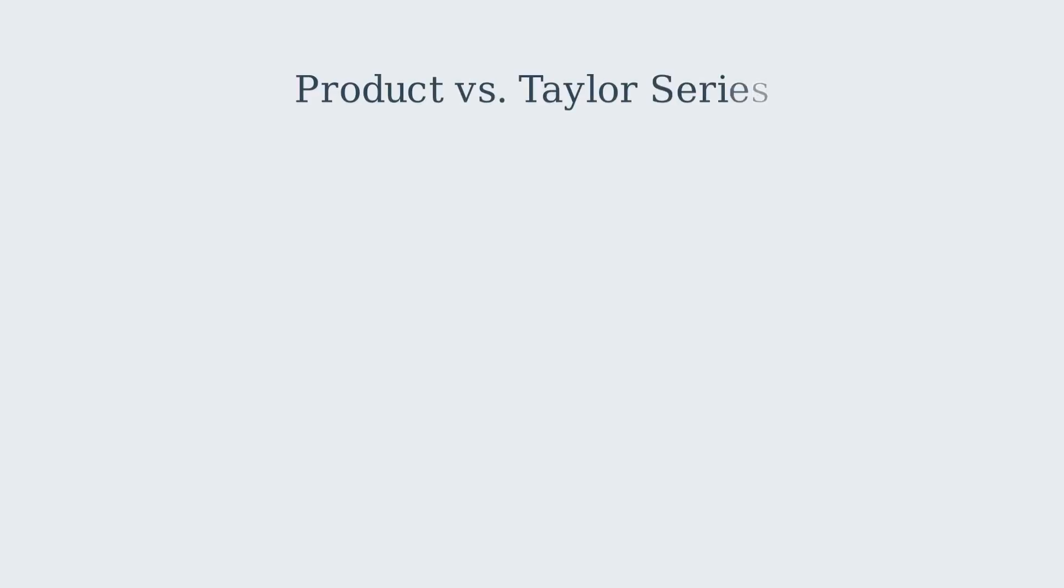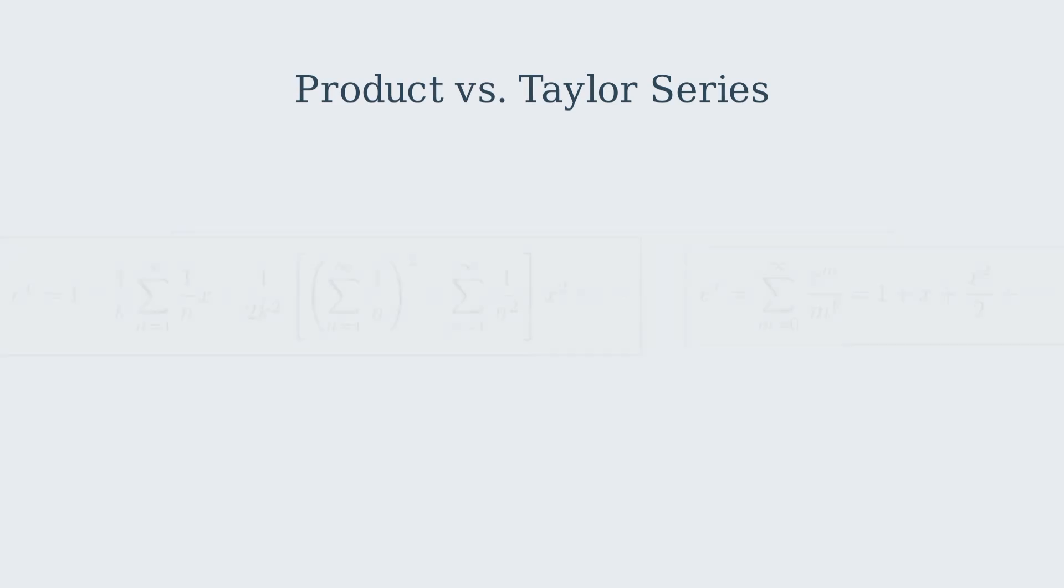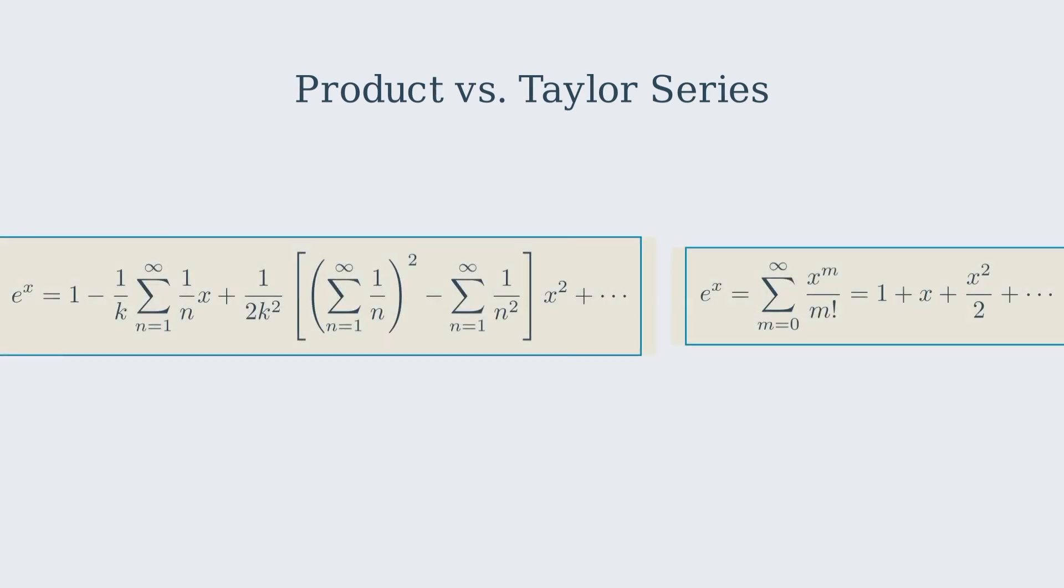Let's expand our product and see what we get. We have e to the x equals 1 minus 1 over k times the sum from n equals 1 to infinity of 1 over n times x plus 1 over 2k squared times the sum from n equals 1 to infinity of 1 over n squared times x squared, and so on. Now, compare this to the Taylor series for e to the x: 1 plus x plus x squared over 2, and so forth.